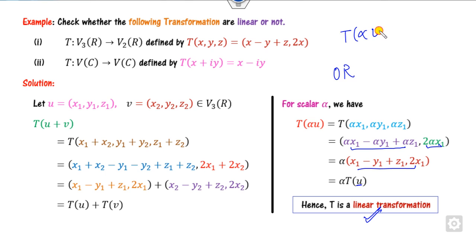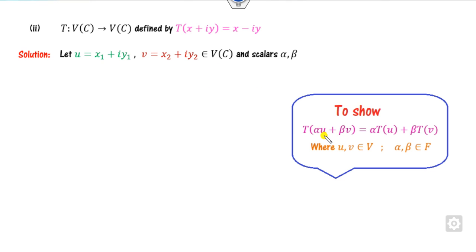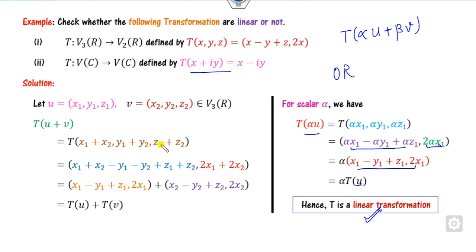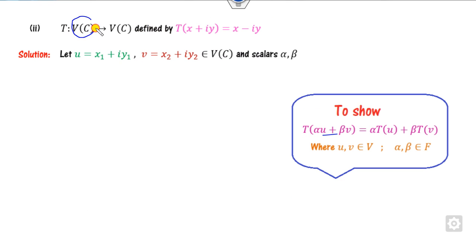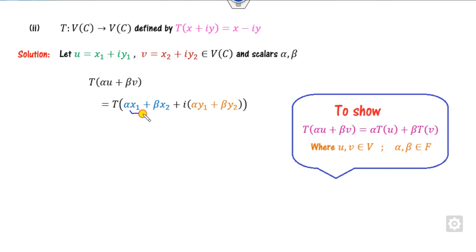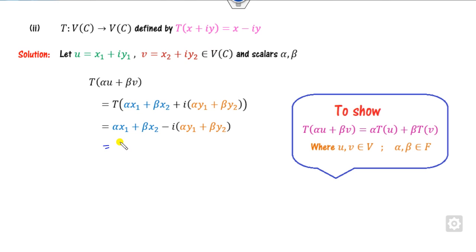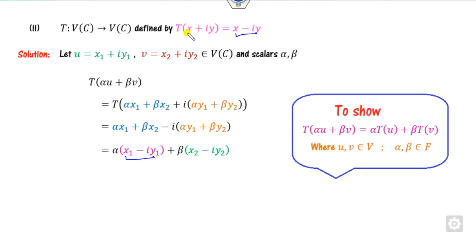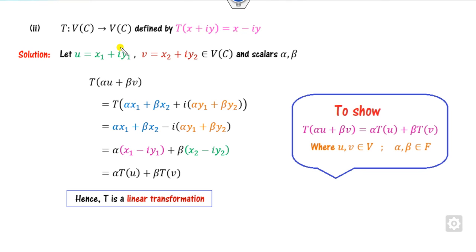Instead of checking two properties separately, you can use the combined property directly. For example, taking elements from V(C) — a complex domain — with scalars alpha and beta, the function is x minus iota y. Writing the combined expression, substituting x₁ and iota y₁ plus the second component, the result is T of U. Since this property is satisfied, it is a linear transformation.